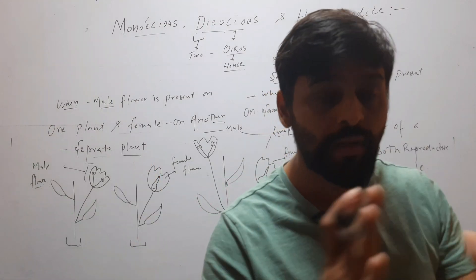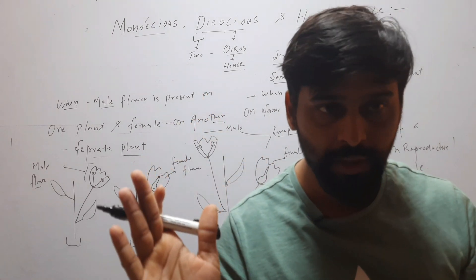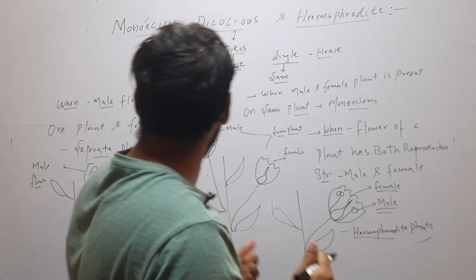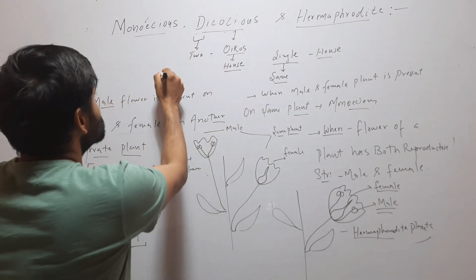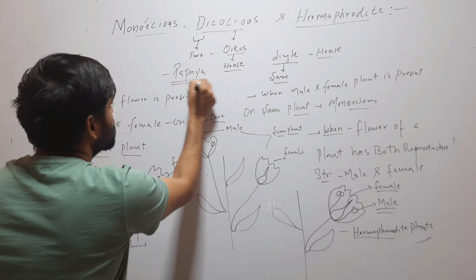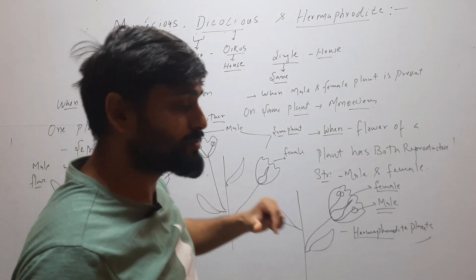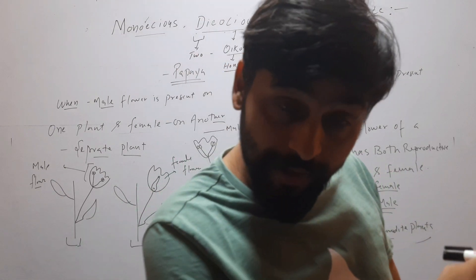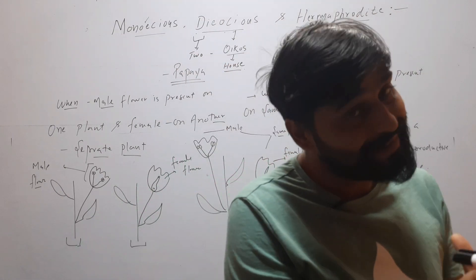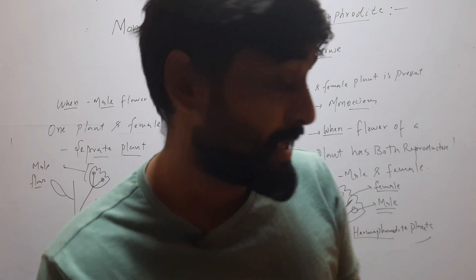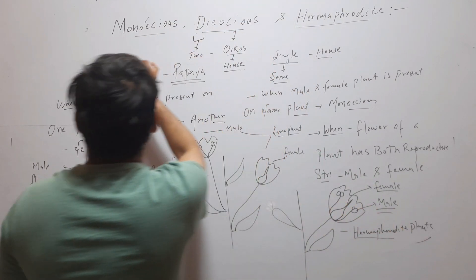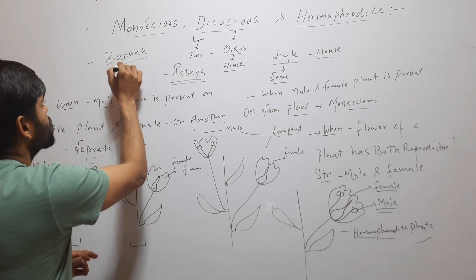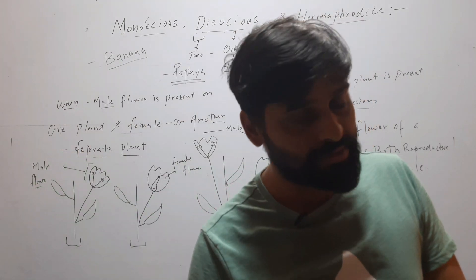So, these are three terms. Dioecious means plants are different — one plant will form male flower, another will form female flower. Example of Dioecious is papaya. The next is Monoecious — when a plant has two types of flowers: one flower has male reproductive structure and another has female reproductive structure. Banana is an example of Monoecious, as banana has both male and female flowers.